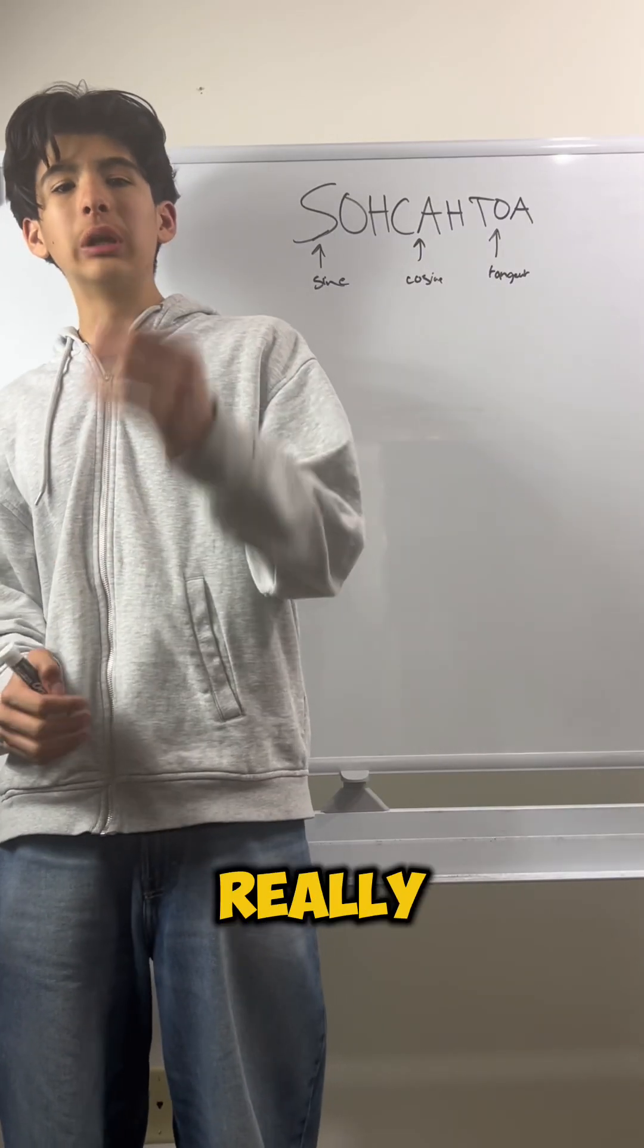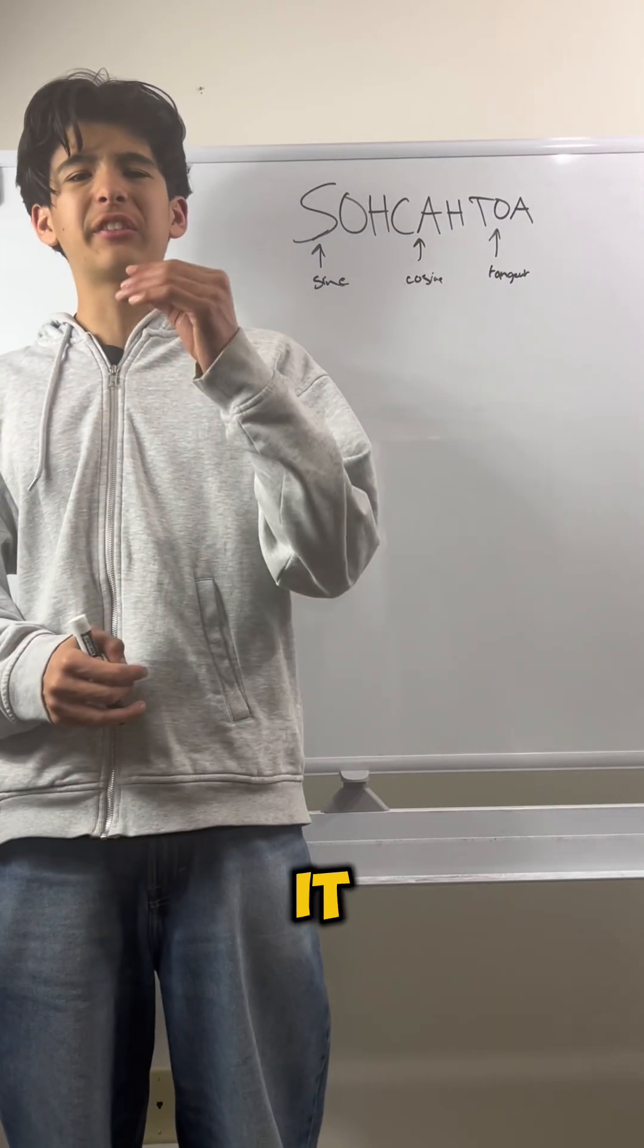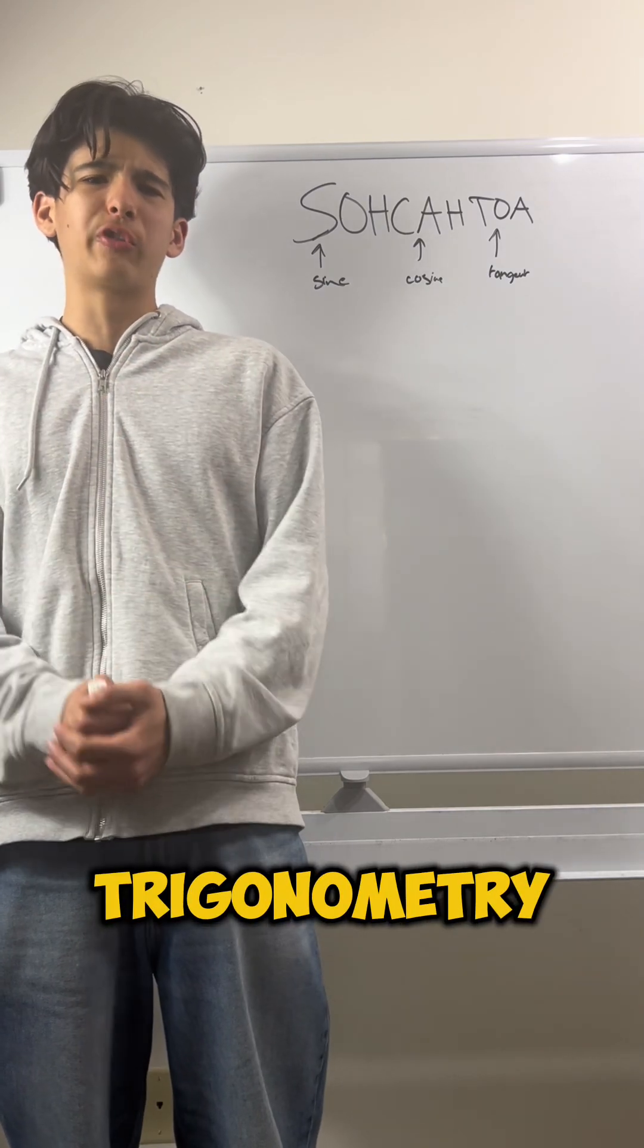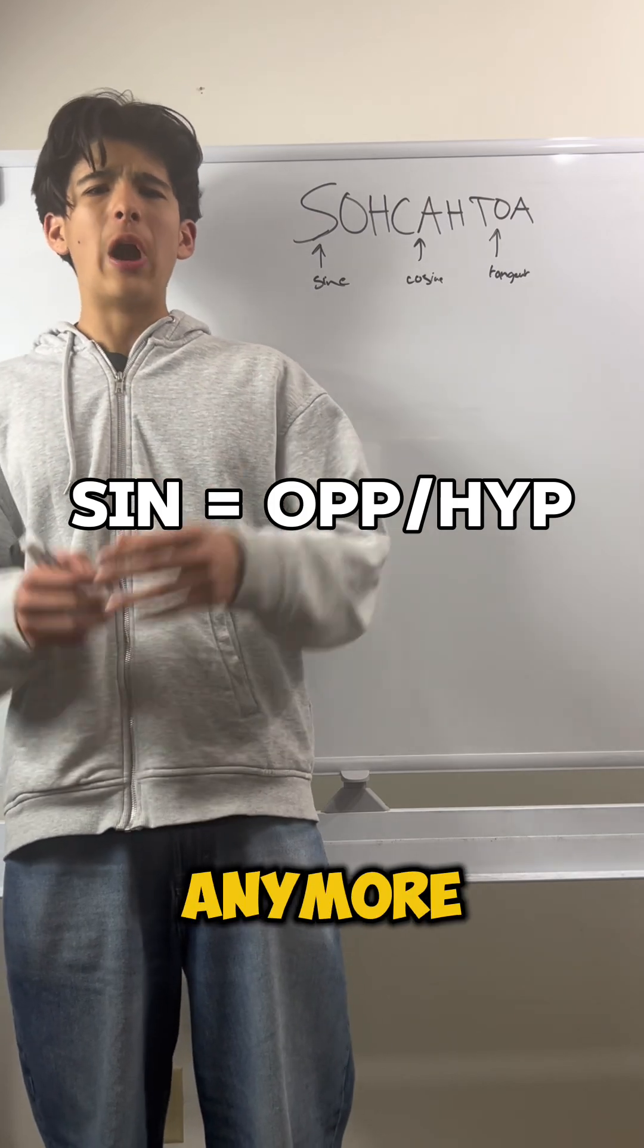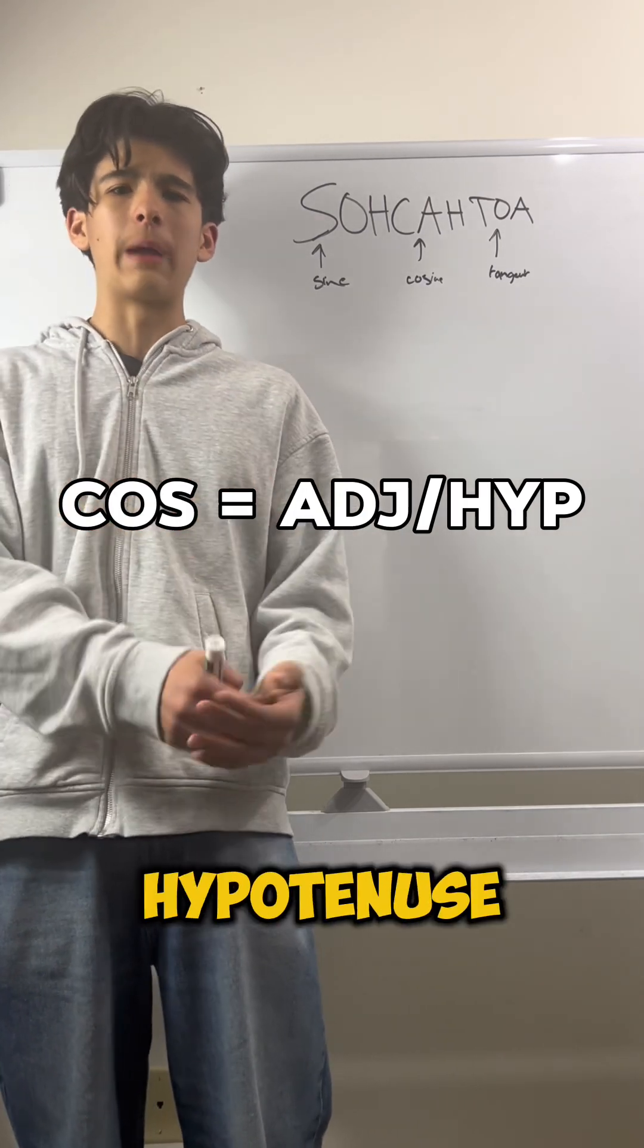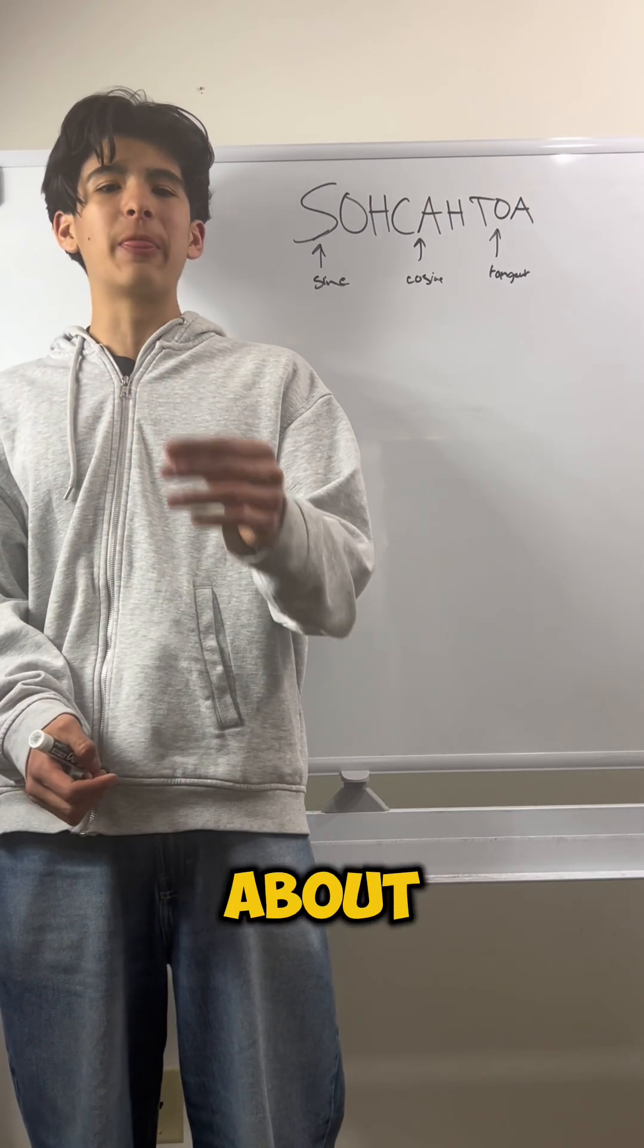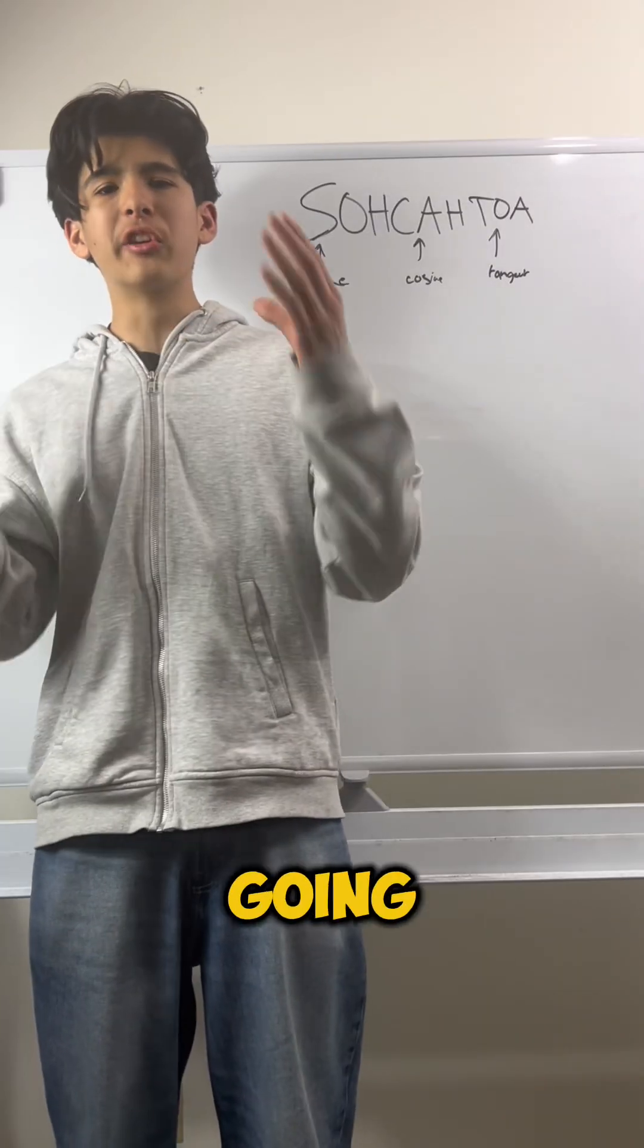Now, don't get me wrong. It is really helpful in geometry, but then it starts breaking down around the trigonometry level. This is because you can't really think of sine as opposite over hypotenuse anymore, whereas cosine is adjacent over hypotenuse. You have to start thinking about them differently. And I'm going to show you how.